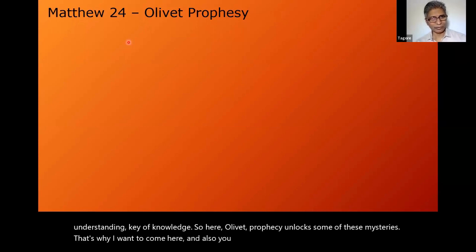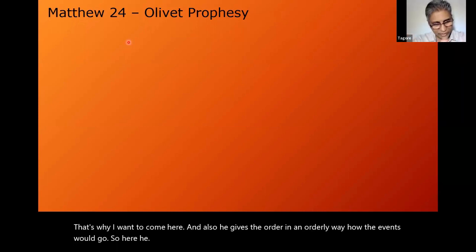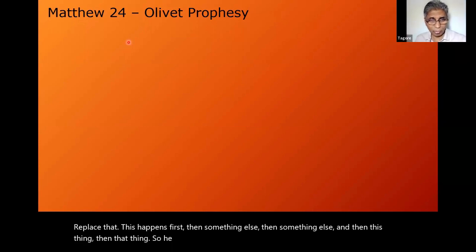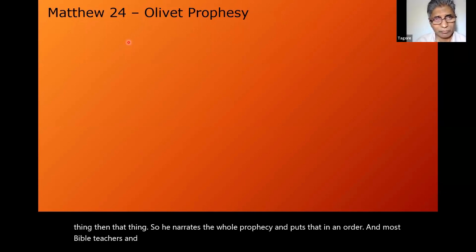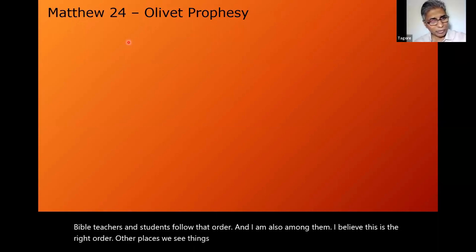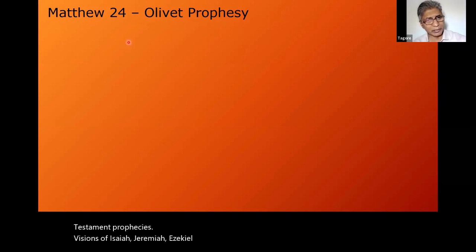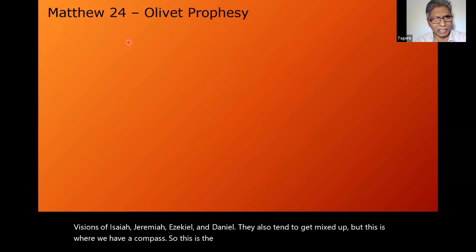He replies that this happens first, then something else, then something else. He narrates the whole prophecy and puts it in order. Most Bible teachers and students follow that order, and I am also among them — I believe this is the right order. In other places we see things mixed up. Old Testament prophecies — visions of Isaiah, Jeremiah, Ezekiel, and Daniel — also tend to get mixed up. But this is where we have a compass: the Olivet Prophecy. This helps us put things in order.